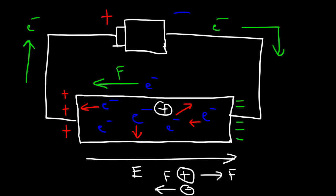That's the job of a battery — the battery causes the electrons to move in a single direction, but it doesn't provide the electrons. The electrons are already present in the wire.